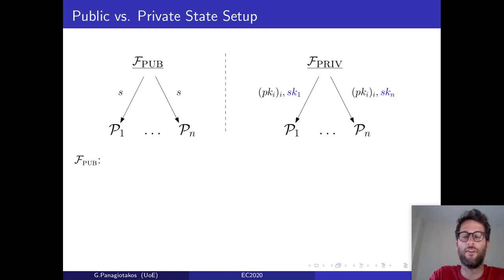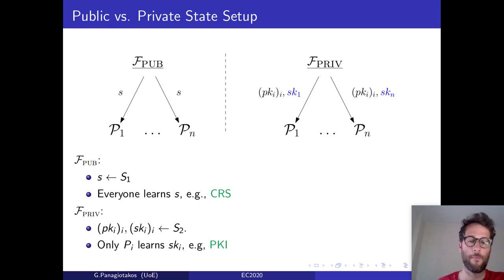Setup functionalities can be further separated in two categories: public state setup and private state setup. In this setting, both functionalities sample a string from a predetermined distribution. In the case of public state setup, everyone learns the string, and as an example, you can think of a CRS, a common random string. On the other hand, in the case of private state setup, different parties learn different parts of the sampled string. Here, an example is a PKI. In a PKI, everyone learns the public keys, but no one learns all the secret keys. Obviously, a public state setup functionality can be emulated by a private state setup functionality, and thus, public setup is a weaker setup assumption.